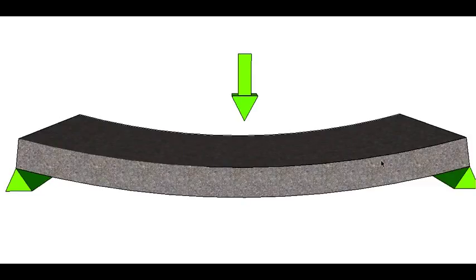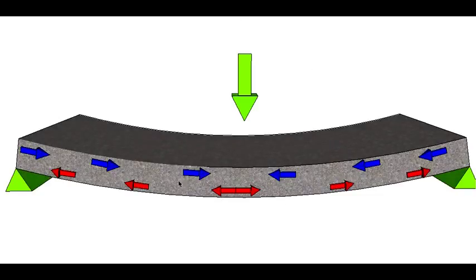So what that does is, because it's now a concave shape, the top of the slab is actually being compressed by the load, and the bottom half of the slab is now in tension because it's actually been made longer.